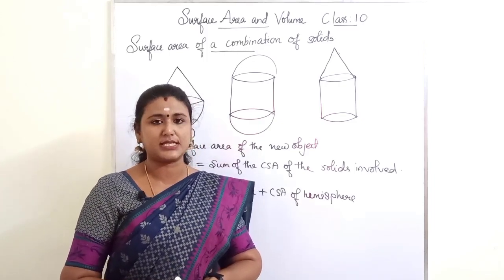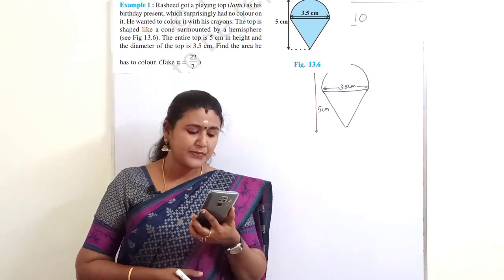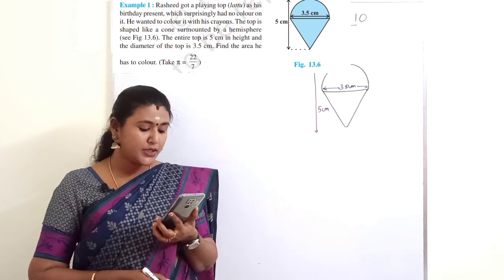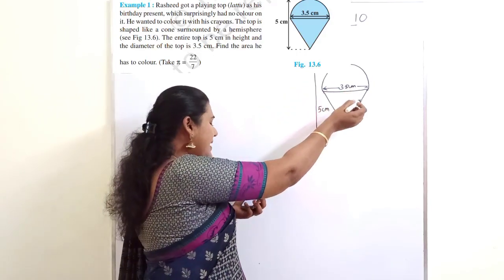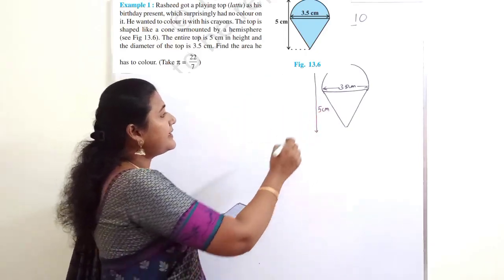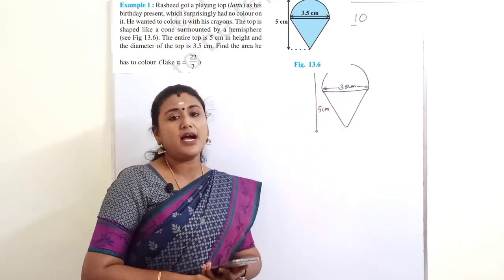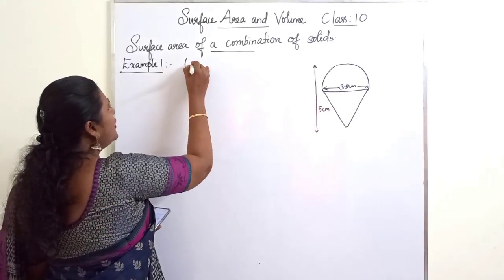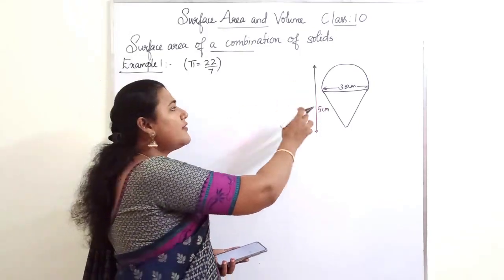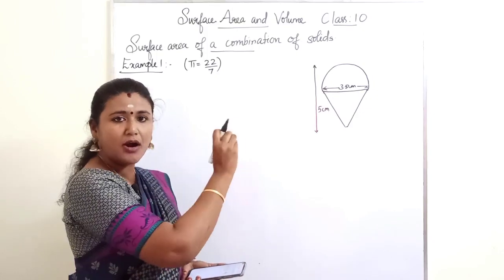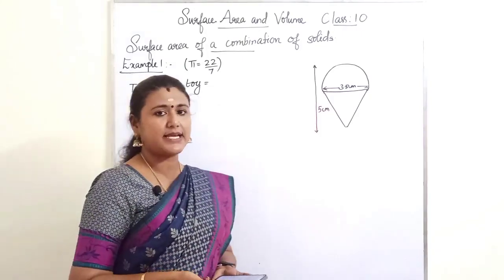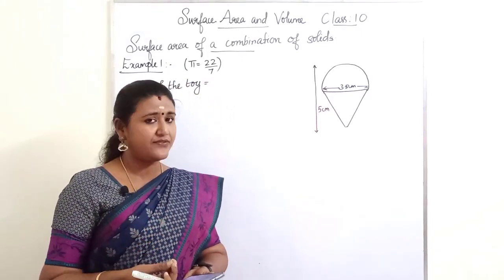Now we are going to see example questions. The first example from the textbook: Rashid got a plain top as his birthday present which had no color on it. He wanted to color it with his crayons. The top is shaped like a cone surmounted by a hemisphere. The entire top is 5 centimeters in height and the diameter of the top is 3.5 centimeters. Find the area he has to color. The value of pi is given as 22/7.